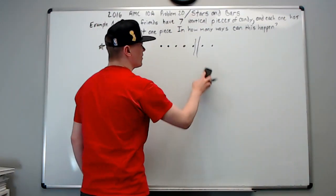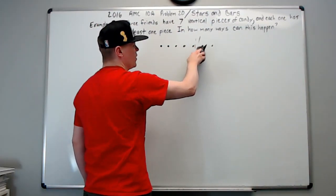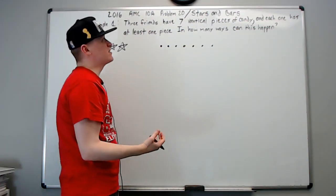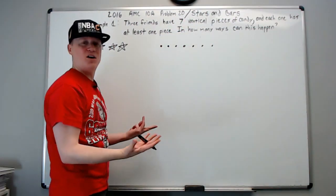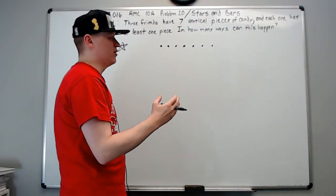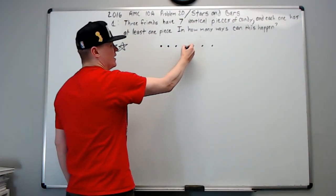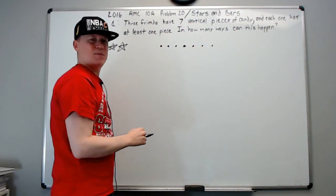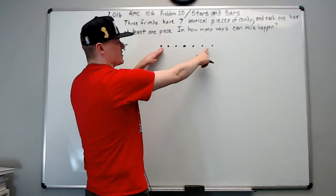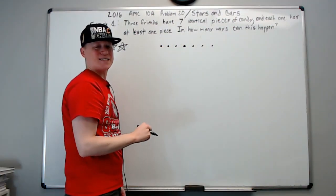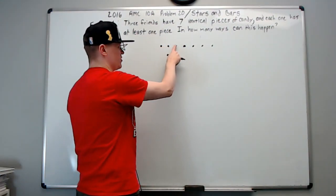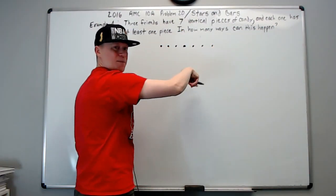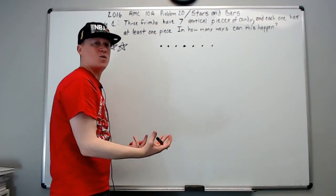So really, where can we put the dividers? We can only put them in between the dots — in the gaps that are available. How many gaps are there? If there are seven items, there are six gaps. If there were eight items, there would be seven gaps, and so on.